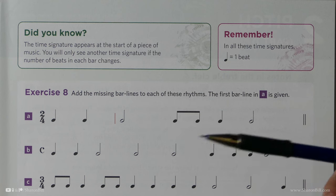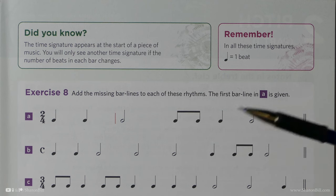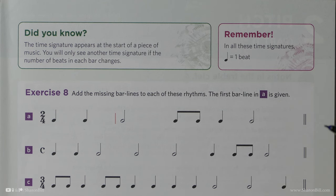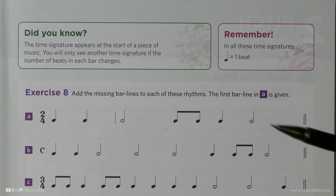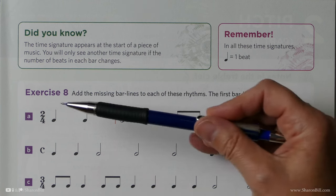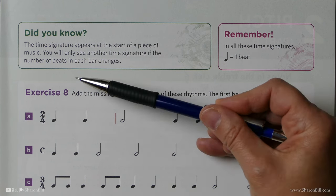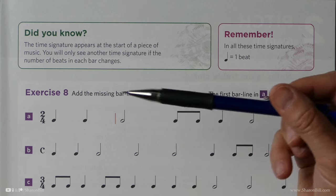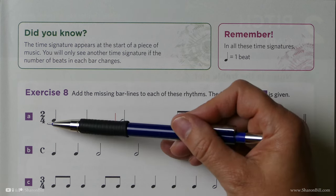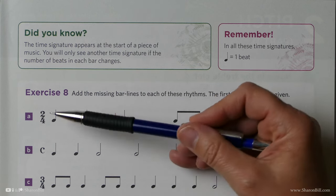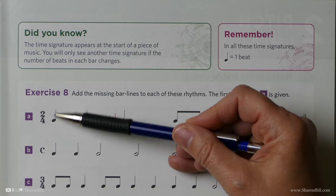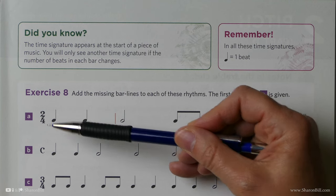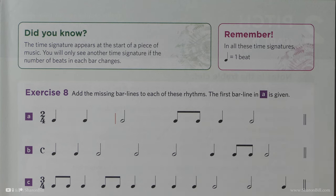The time signature could change later on in the piece — a composer could choose to change the time signature whenever he wants to. So if you play the piece of music, you need to check and keep an eye out in case it does change. At the start of a next section of music, you might find a new time signature, but it will always be at the beginning of the piece.